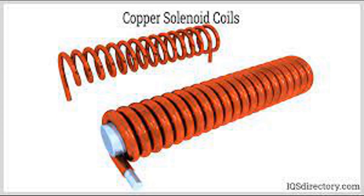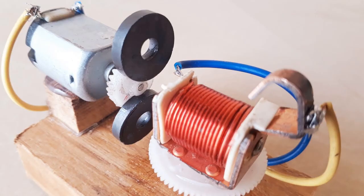A coil in electrical and electronics refers to a component consisting of wire wound into a helical shape. It is typically made of conducting material such as copper or aluminum and is used to create magnetic fields, store energy, or generate electromagnetic forces.